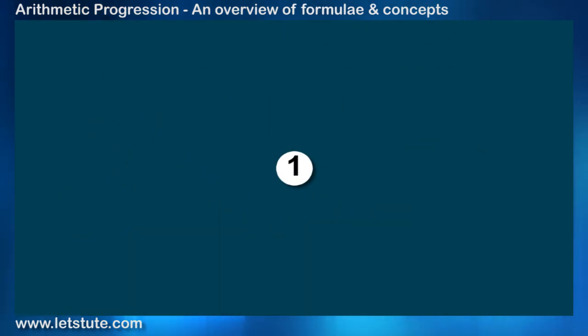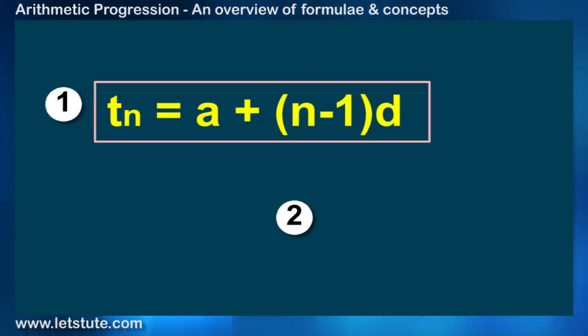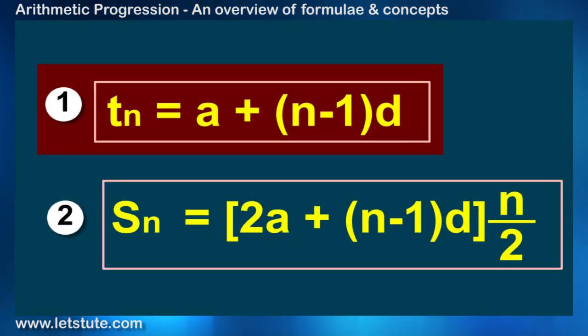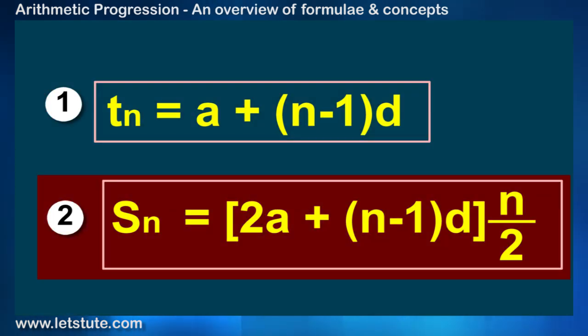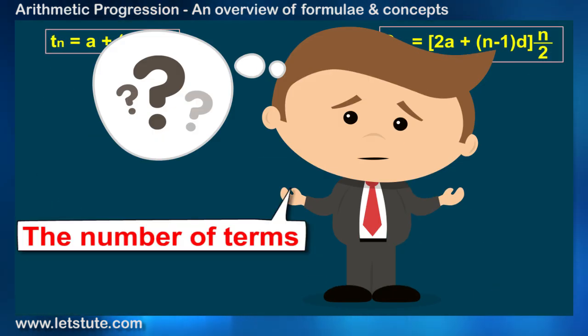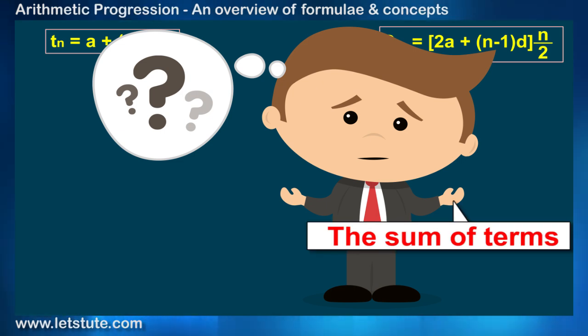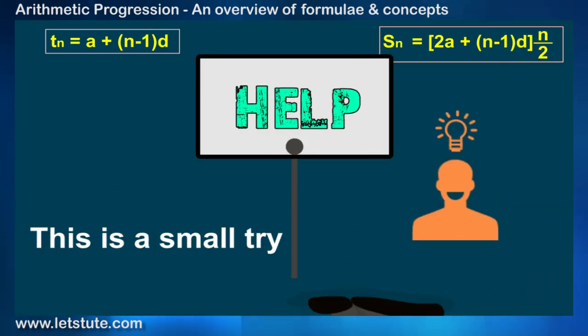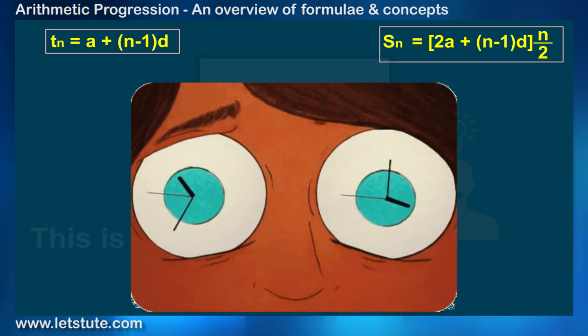The first one is Tn and the second one is Sn. The whole chapter revolves around these two formulae, but still there is a lot of confusion about the terms, the number of terms, the sum of terms and much more. This is a small try to help you all in understanding and applying the formulae.